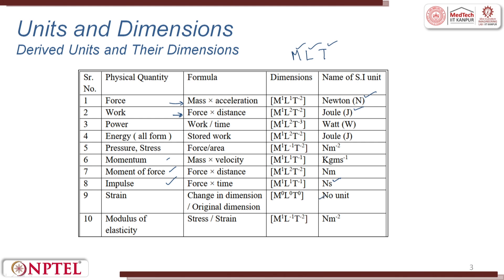Strain is change in dimension divided by original dimension — it has no units. Modulus of elasticity is stress per unit strain, with dimensional formula M¹L⁻¹T⁻², equivalent to newtons per meter squared.